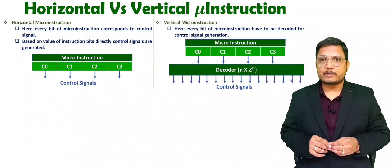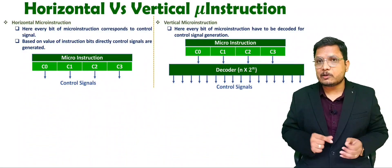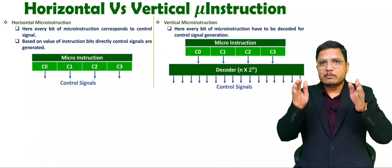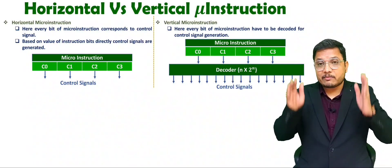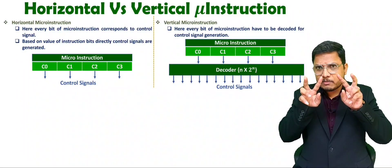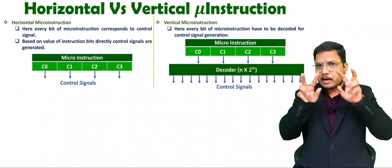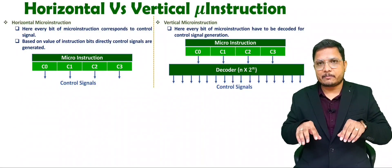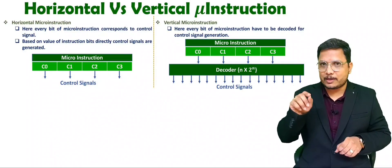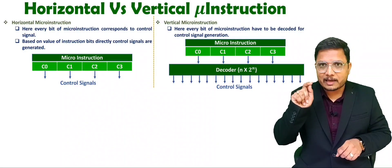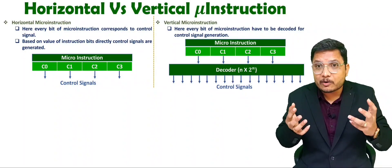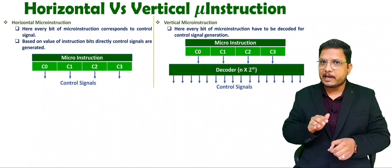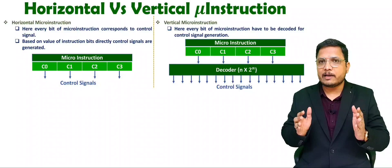For example, if you want to have 16 control signals, then with vertical micro instruction you use a vertical structure. In vertical structure, only 4 bits are there in the instruction, and after that, by using a decoder, you generate 16 control signals. If you want to generate more control signals, you are expanding the circuit vertically — that is why it is referred to as vertical micro instruction.